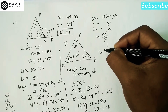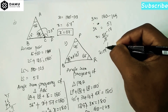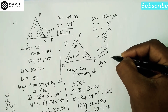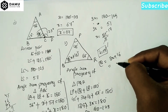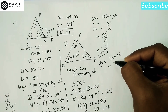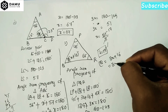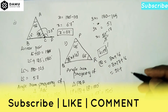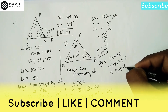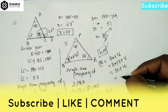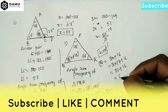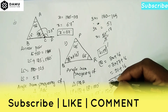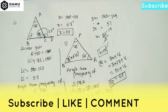So x equals 17 degrees. Now angle Q equals 3x plus 16, that is 3 into 17 plus 16. So 3 times 17 is 51, plus 16 equals 67 degrees. Therefore angle Q will be 67 degrees.